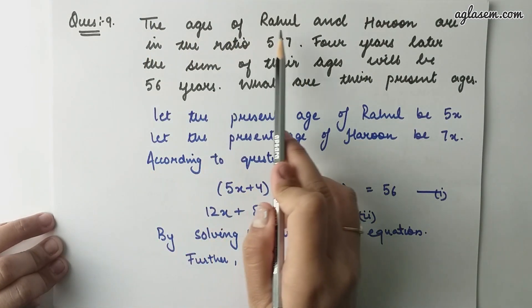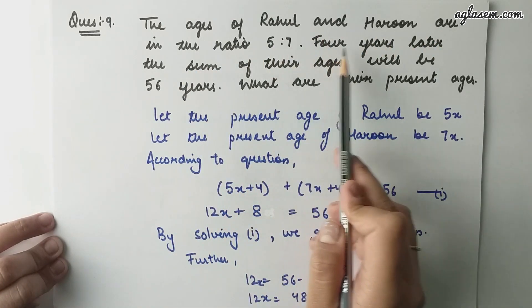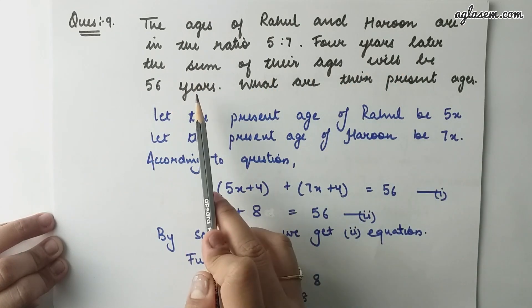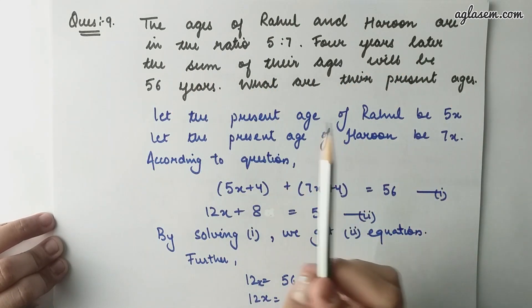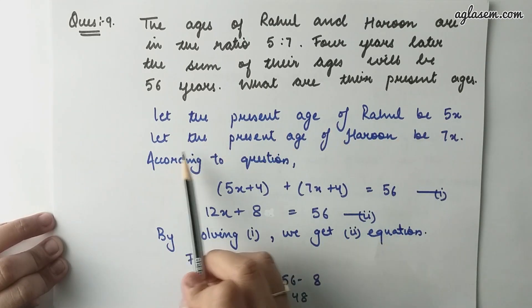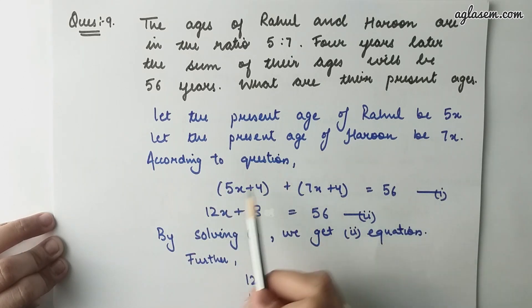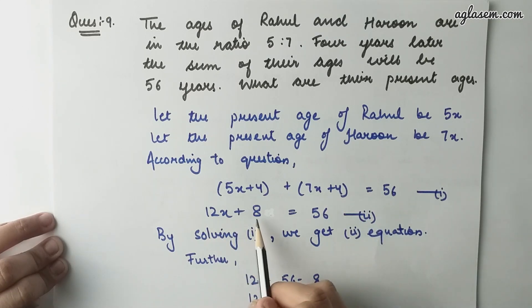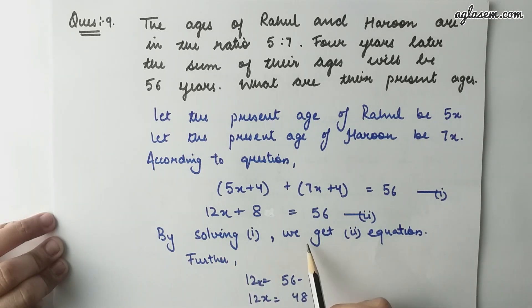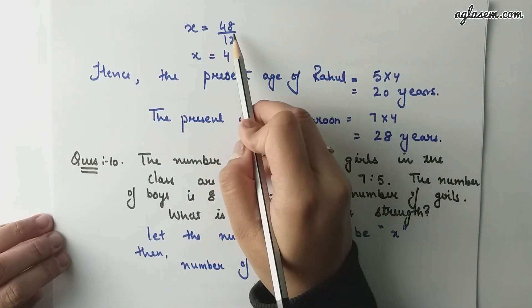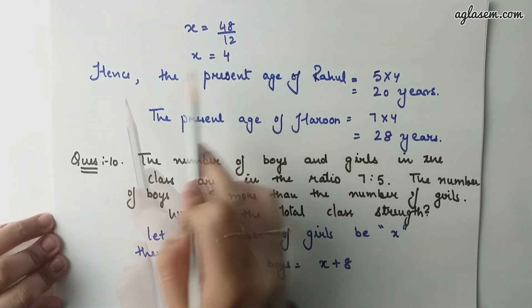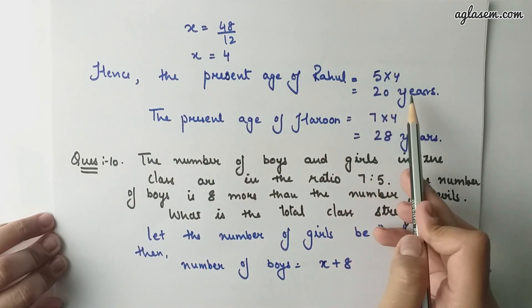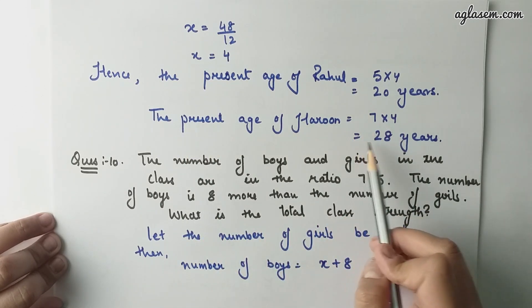Question number 9: The ages of Rahul and Harun are in the ratio of 5 is to 7. Four years later, the sum of their ages will be 56 years. What are their present ages? Let Rahul's present age be 5x and Harun's present age be 7x. According to the question, (5x plus 4) plus (7x plus 4) equals to 56, giving 12x plus 8 equals to 56, so 12x equals to 48 and x equals to 4. Hence, Rahul's present age is 20 years and Harun's present age is 28 years.